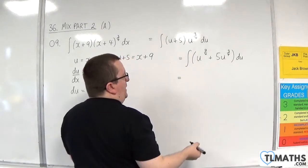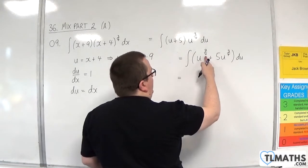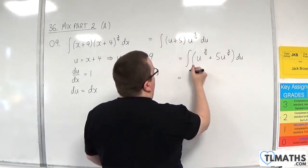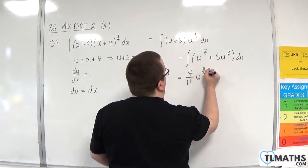I now want to add 1 to the power and divide by the new power. So 7 quarters plus 1 will be 11 quarters. Divide by that is multiplied by 4 elevenths. So 4 elevenths u to the 11 quarters.